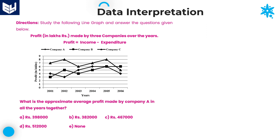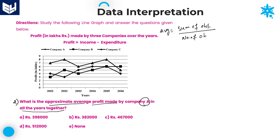Let us look at the next question — the second one. What is the approximate average profit made by company A in all the years together? As we all know, average is equal to sum of observations divided by number of observations. Here, sum of observations is the sum of all profits of company A.